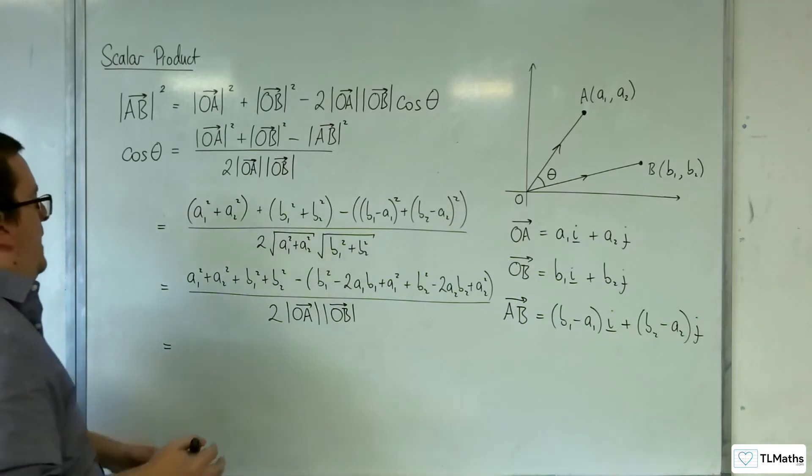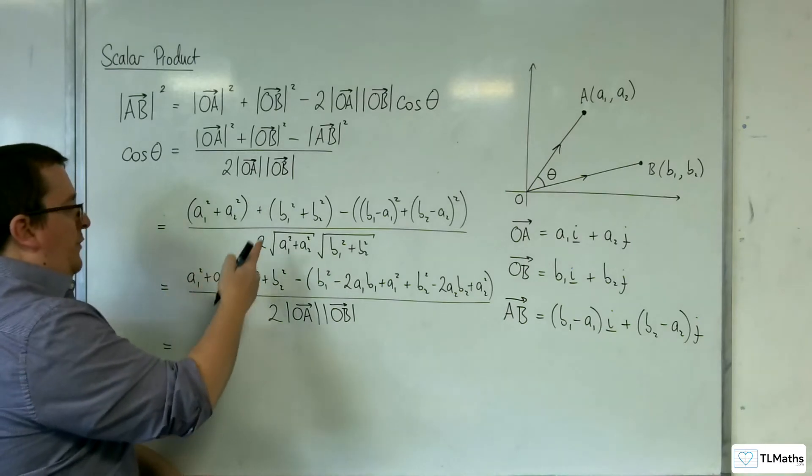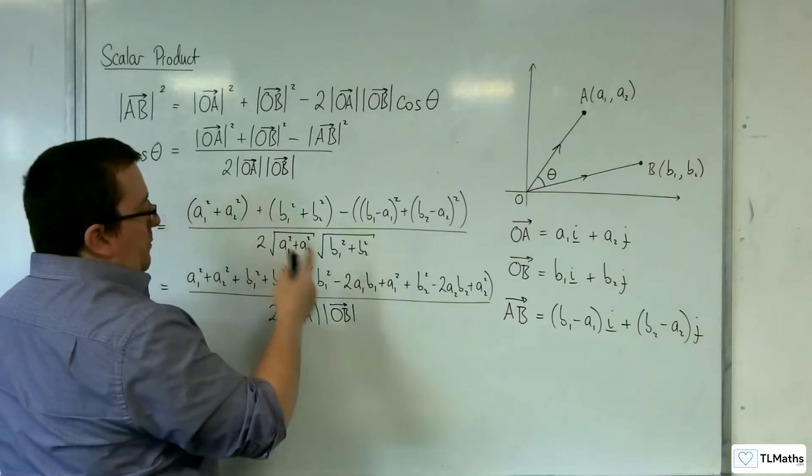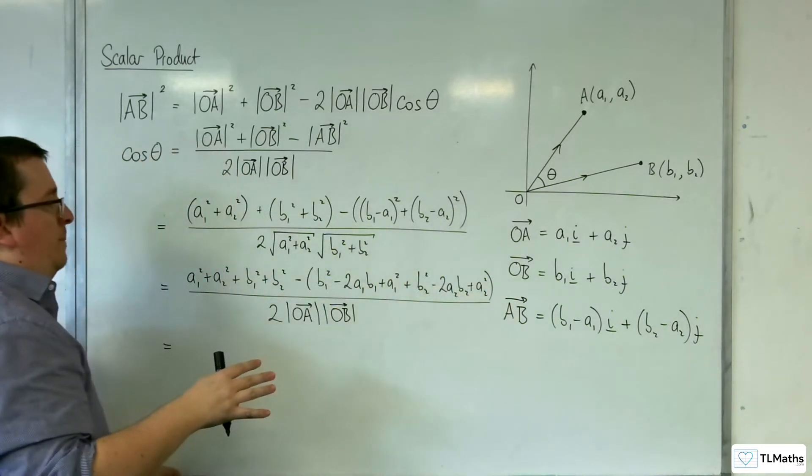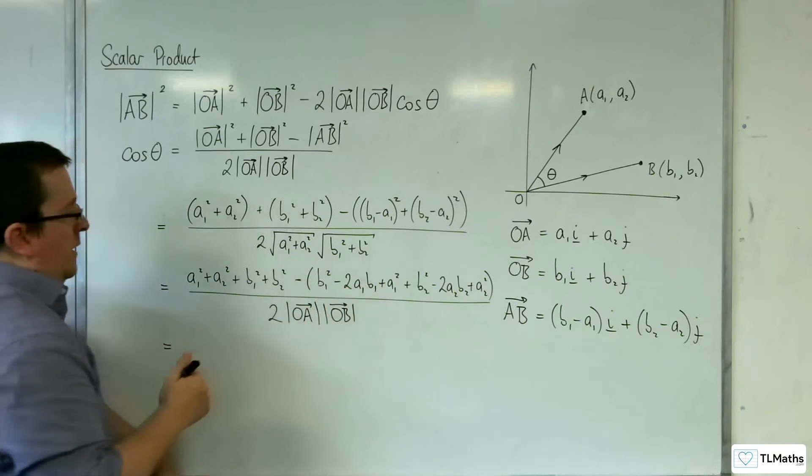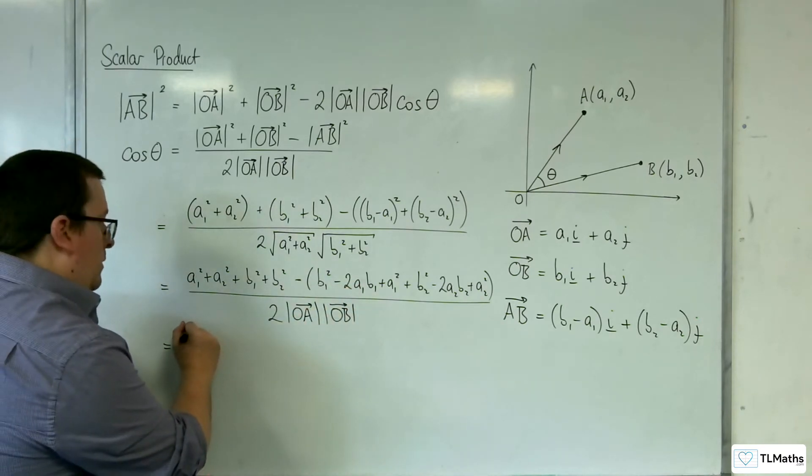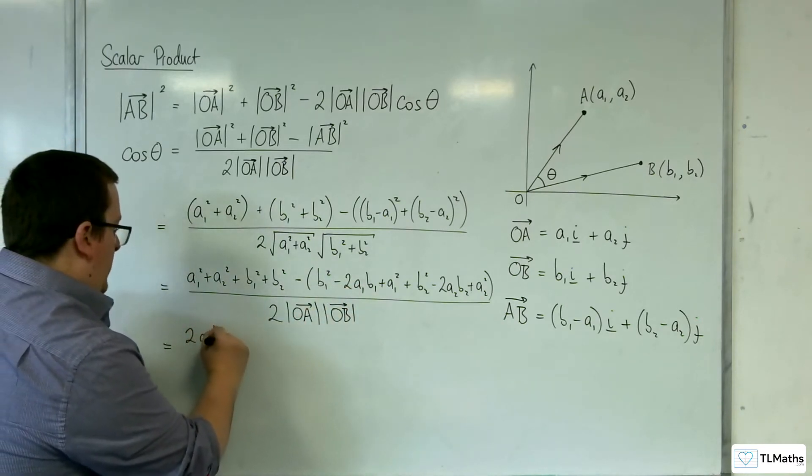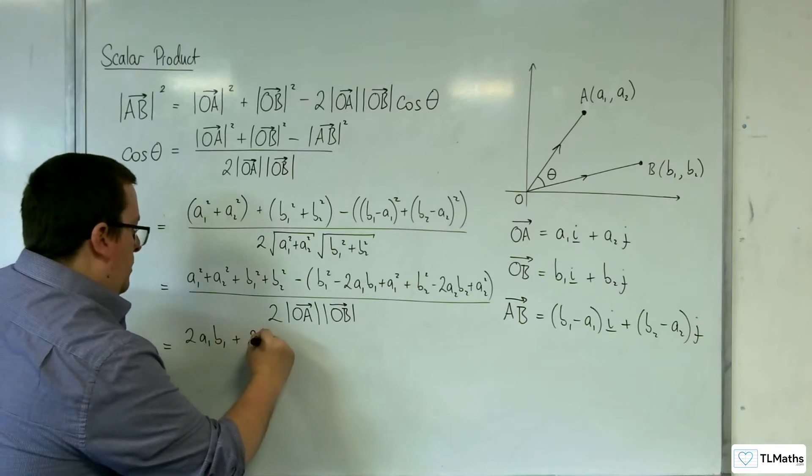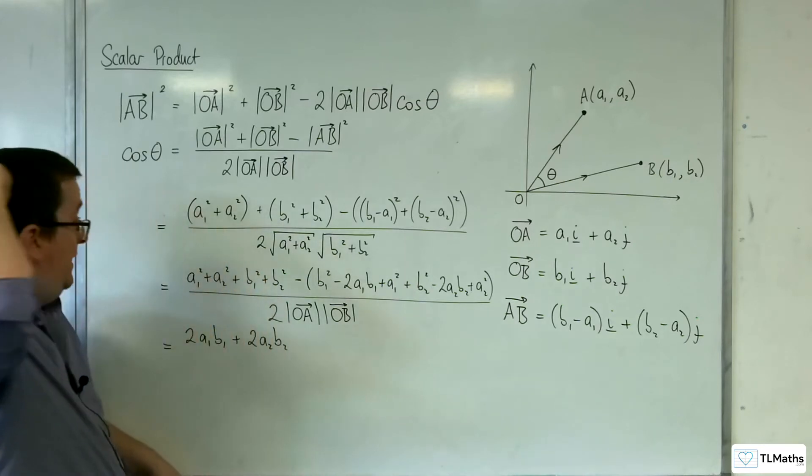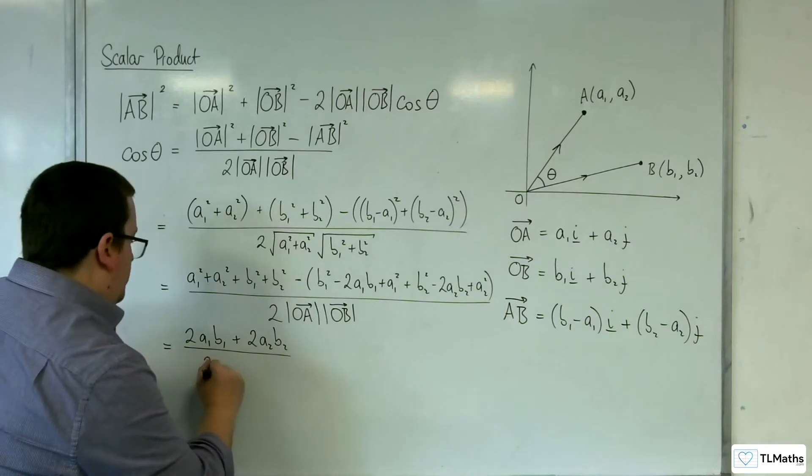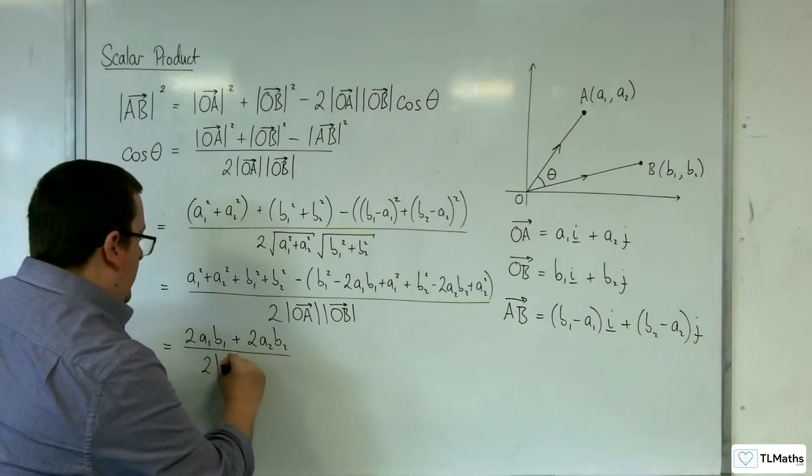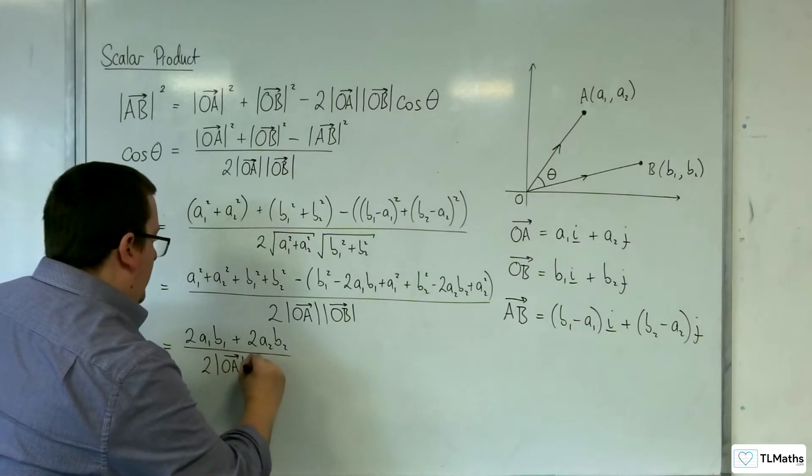So we're going to have A1 squared plus A2 squared plus B1 squared plus B2 squared, subtracting B1 squared, A1 squared, B2 squared and A2 squared. So they're all gone. And I've got take away, and I've got the 2A1B1 plus 2A2B2, all over two lots of the length of OA times the length of OB.